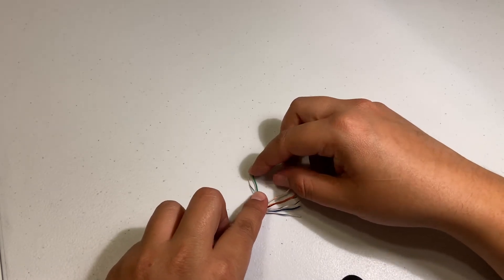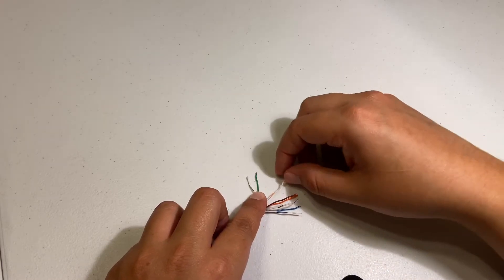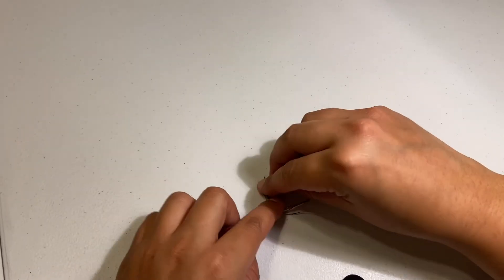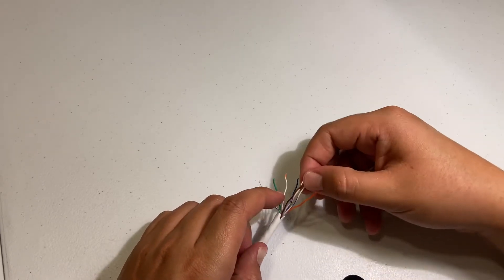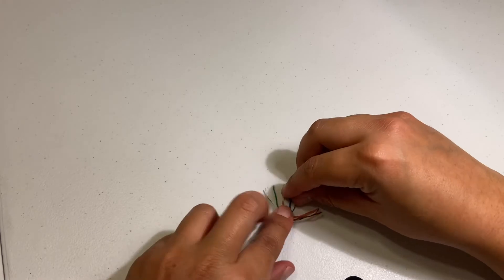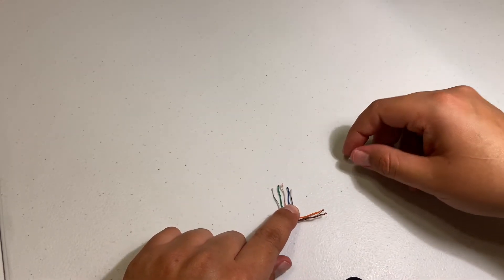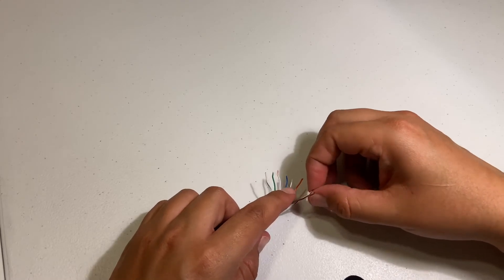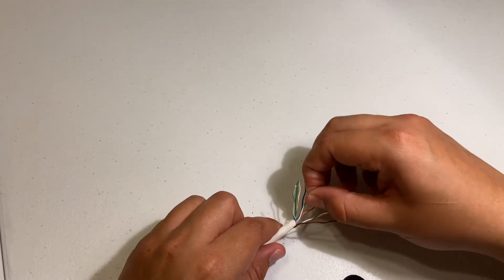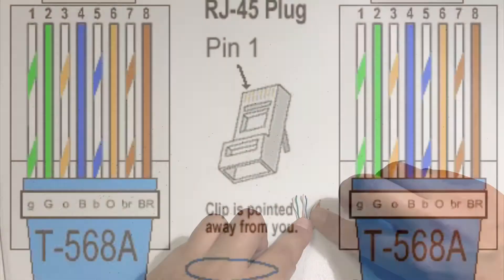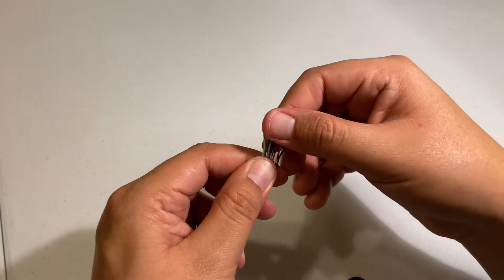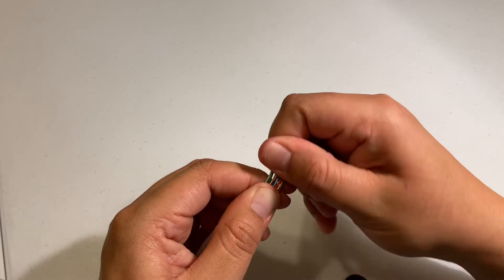It's gonna be light green, green, light orange, blue, light blue, orange, light brown, and then brown. All right, so this is how mine is looking - I'm trying to put them in order and make them stay like that.